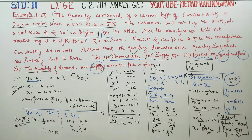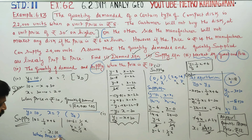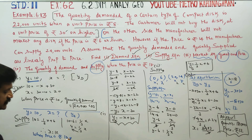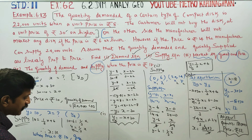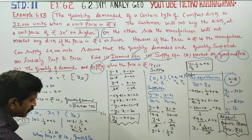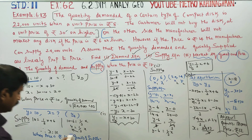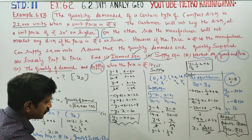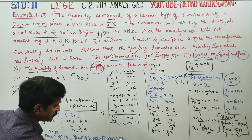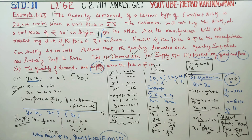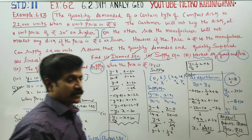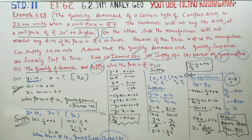Therefore, when the price is Rs.10, the quantity supplied is 12,000 CDs. These are the final answers for this problem. Thank you.